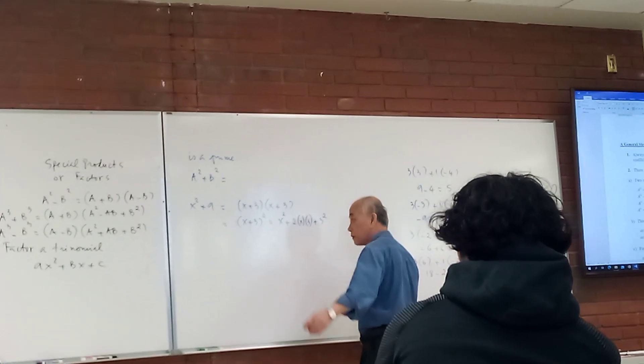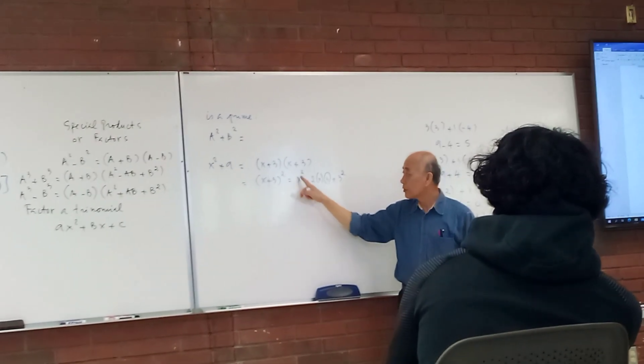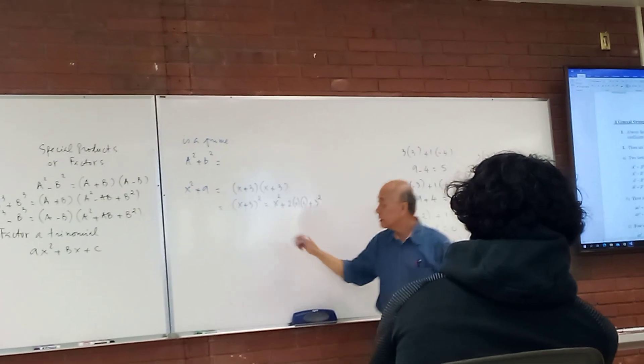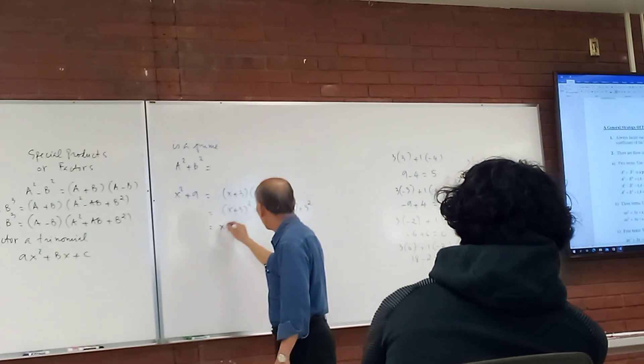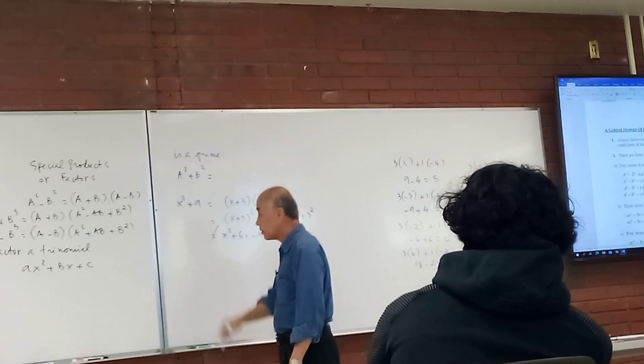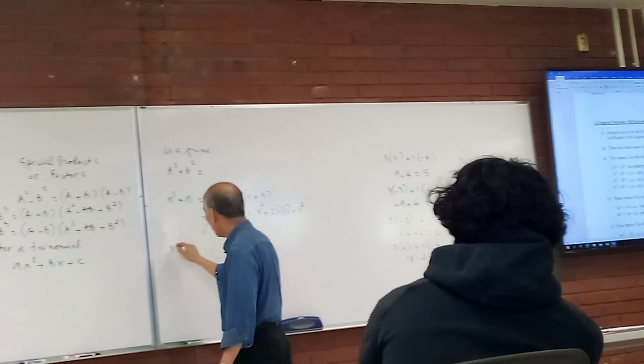The special product: (a + b)² equals a² + 2ab + b². This is x² + 6x + 9, not equal. If you do both negative, then it won't work.